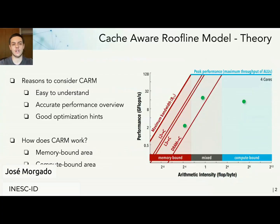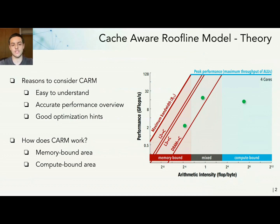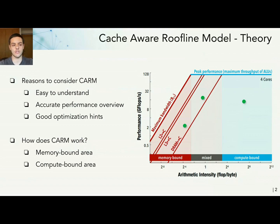Starting off with the CARM, the Cache-Aware Roofline Model. This is a performance model that is very easy to understand, which can give you an accurate performance overview of your application for a given system, while also giving you some good optimization hints that you can extract just from observing the graph.